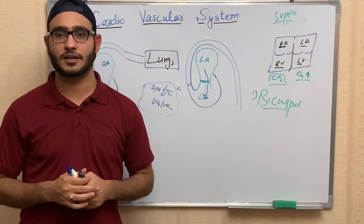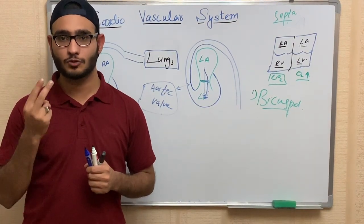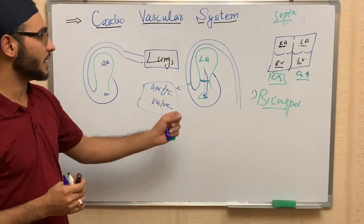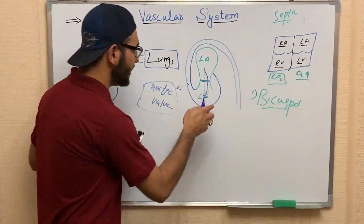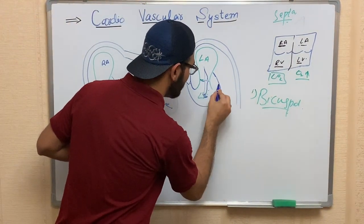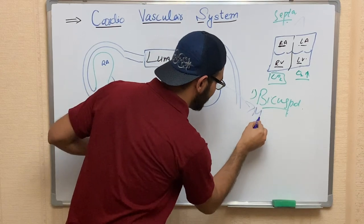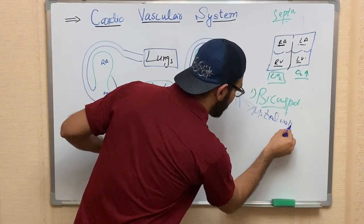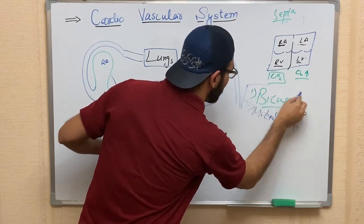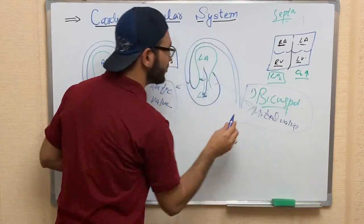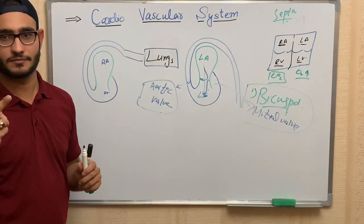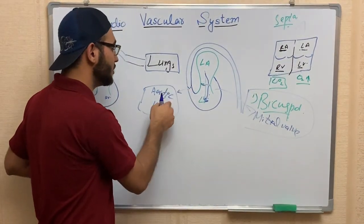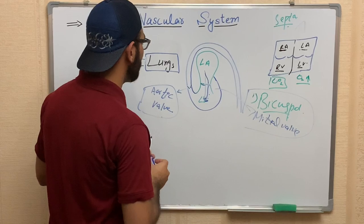If someone asks which valve in the heart contains only two cusps, the answer is the bicuspid valve, also called the mitral valve. The mitral valve is the only valve in the heart that contains two cusps. Blood then enters the aorta through the aortic valve.